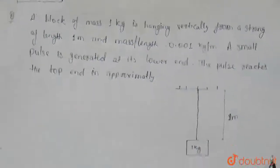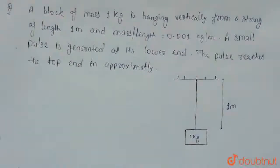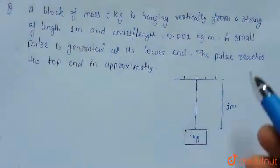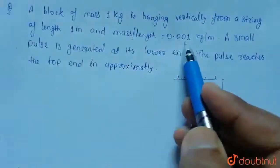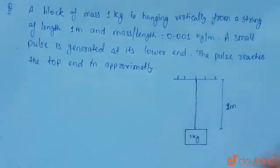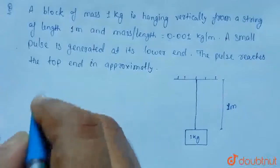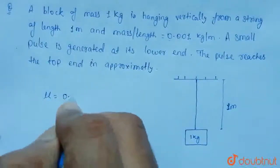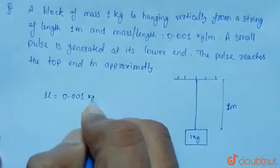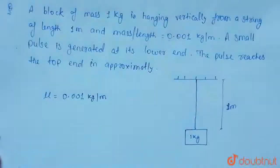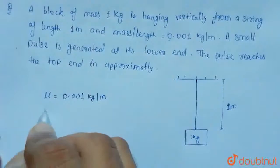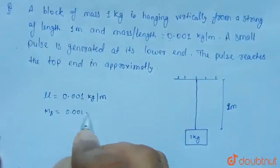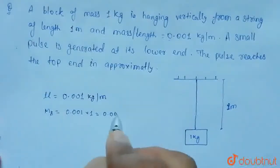So the question is: this is a block of 1 kg, hanging from a string of length 1 meter. The mass per unit length (mu) of the string is 0.001 kg per meter. Total length is 1 meter, so mass of string = 0.001 × 1 = 0.001 kg.